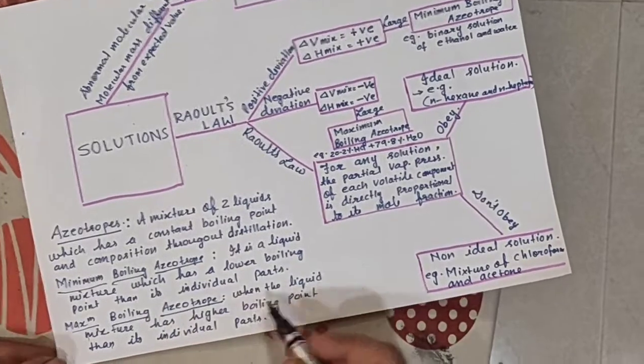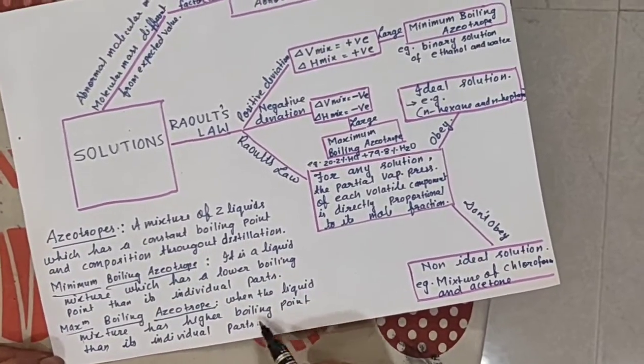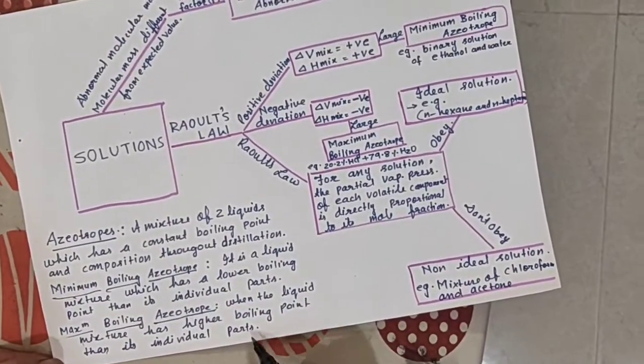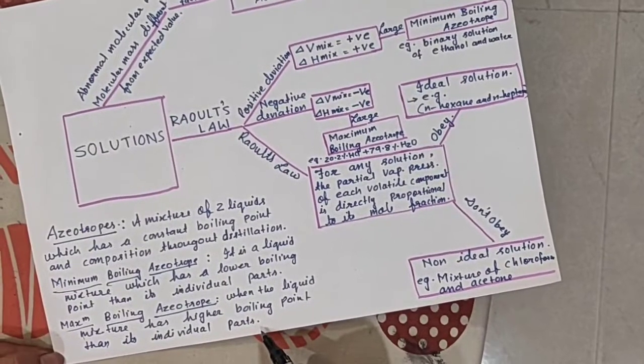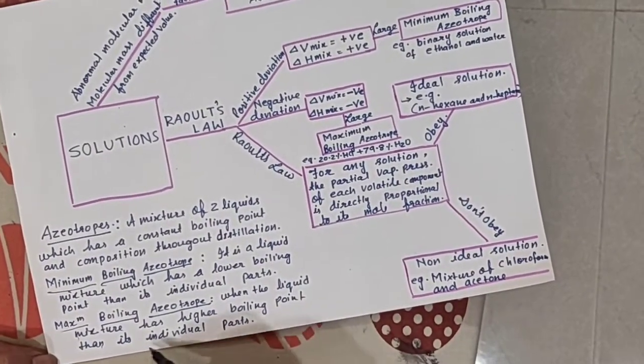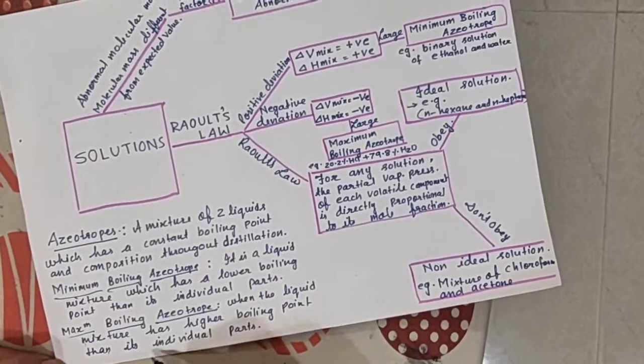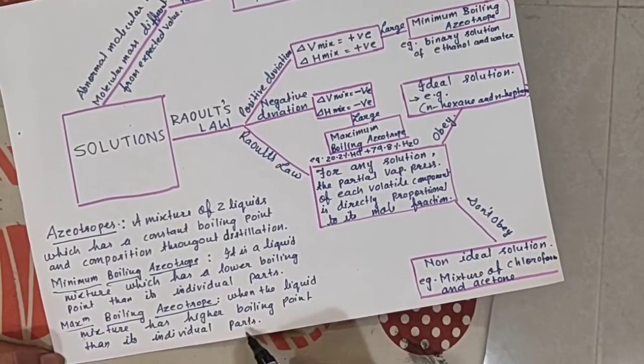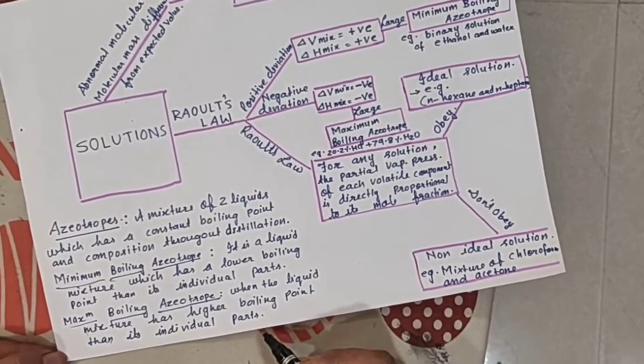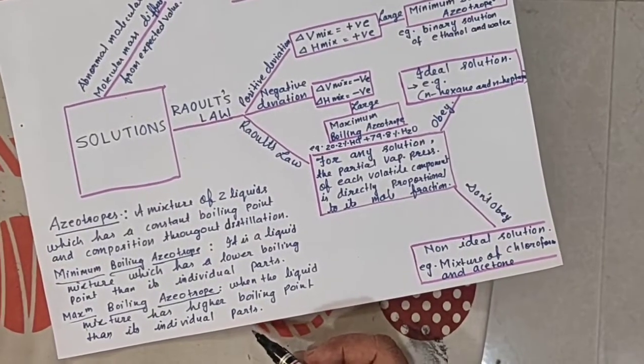What is maximum boiling azeotrope? When the liquid mixture has higher boiling point than its individual parts. Example: 20.2% HCl and 79.8% H2O. This is all about azeotrope.